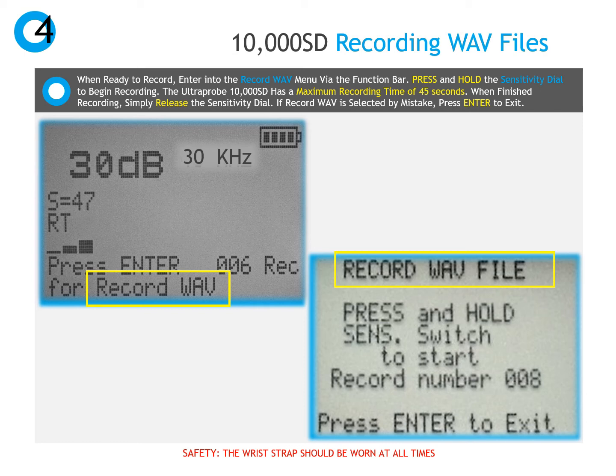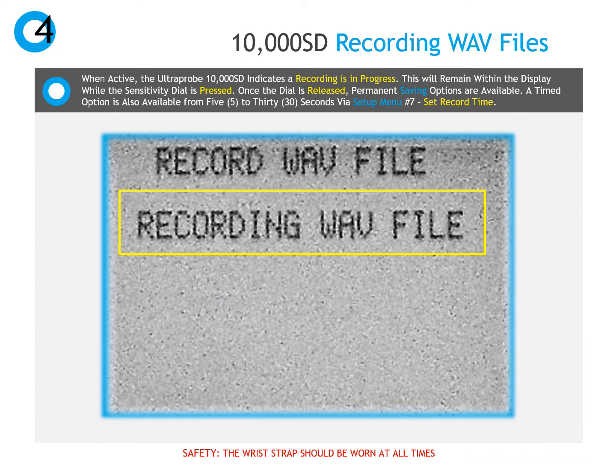Once the sensitivity is adjusted between 2 to 4 bars, the inspector is ready to record. Press enter in the record wave menu and the screen will advance to the record wave file options. Press and hold the sensitivity dial to begin recording. The Ultra Probe 10,000 SD has a maximum recording time of 45 seconds. When finished recording, release the sensitivity dial. While the instrument is recording, a recording wave file message appears on the screen, and once the sensitivity dial is released, saving options are available. Remember that while recording, the inspector should keep the instrument still to ensure a quality recording.